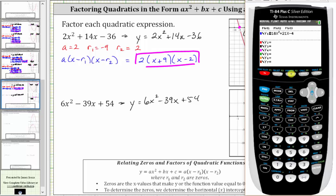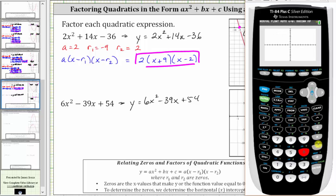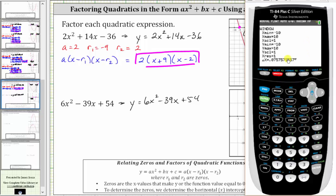We press y equals, clear any old functions, and enter the new function y equals six x squared minus 39x plus 54. Let's start with the standard window by pressing zoom six, which we can always change. Notice how we can see both horizontal intercepts, so there's no real reason to adjust the window, but let's adjust it anyway to get a better view. Let's change the x-axis to go from negative two to seven. So we press window, x min negative two, x max seven, and then graph.